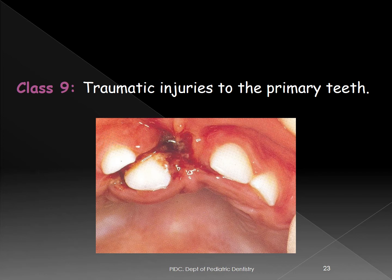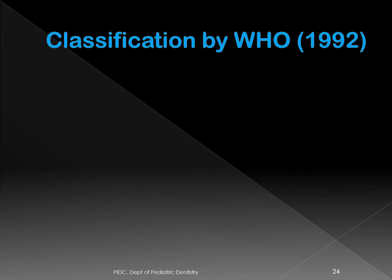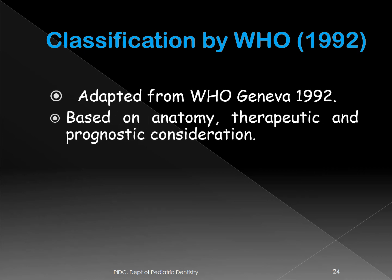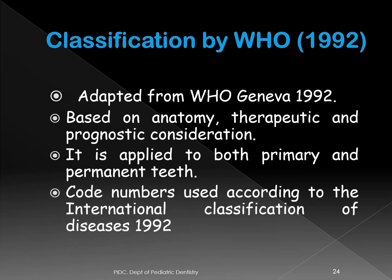This created problems in classifying because additional information was needed for Class IX. The WHO classification came out to address this. It is mostly based on anatomy and therapeutic and prognostic considerations, and it is applied to both primary and permanent dentition. Each injury has a code number according to the International Classification of Diseases.